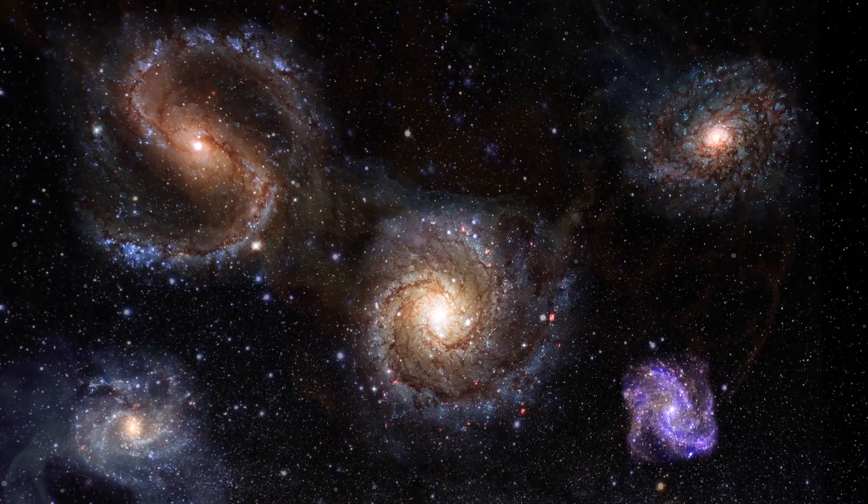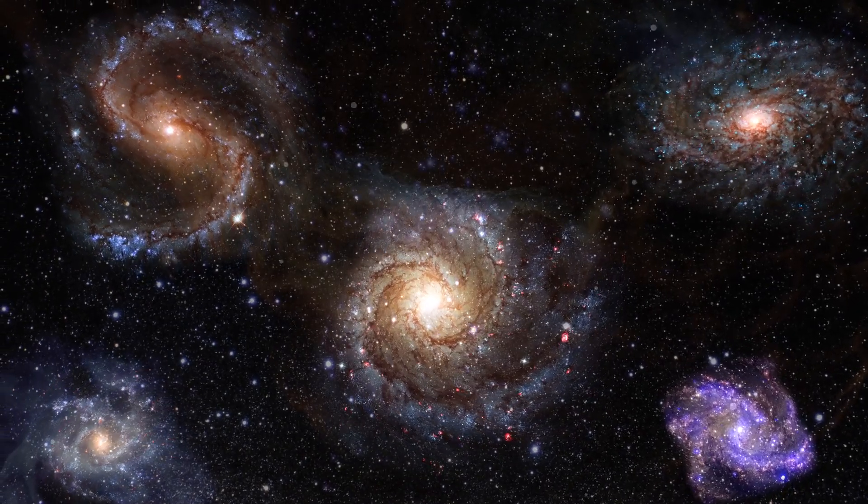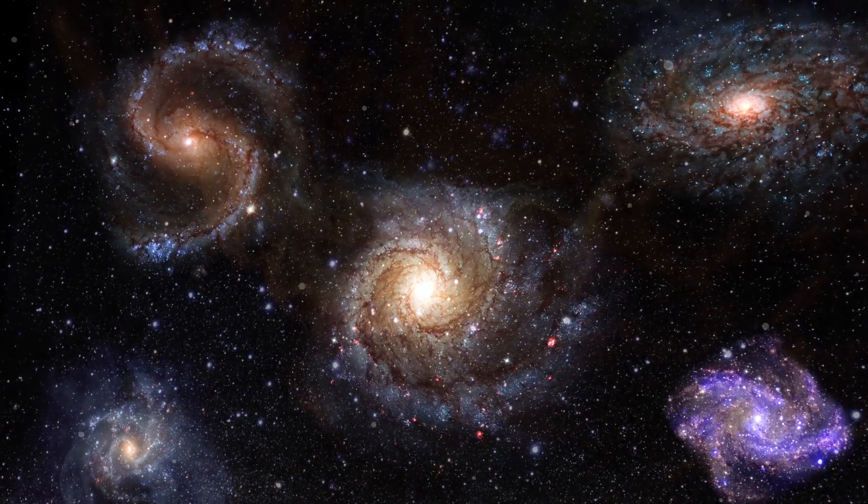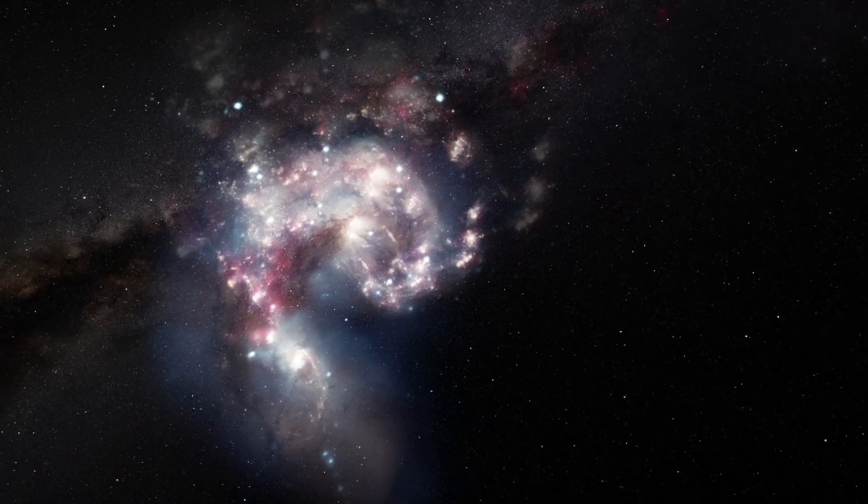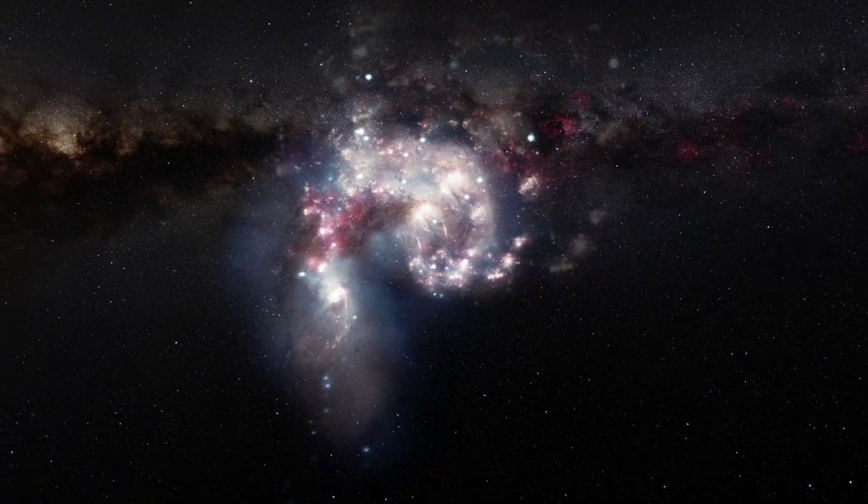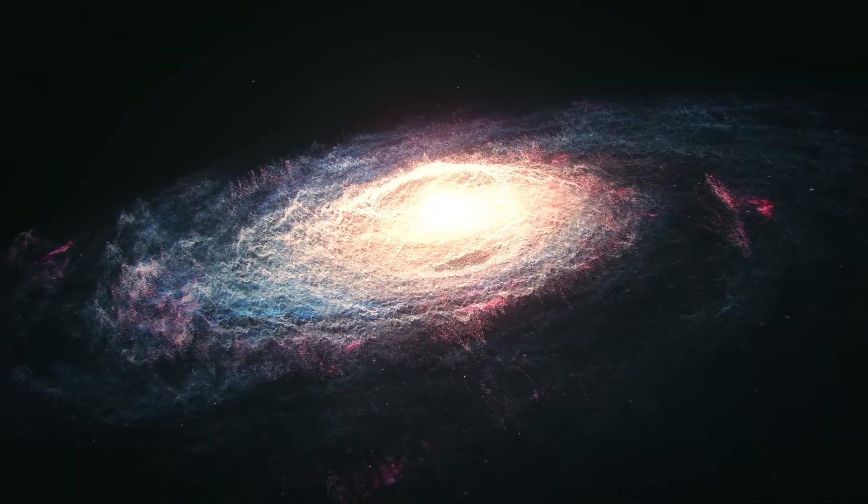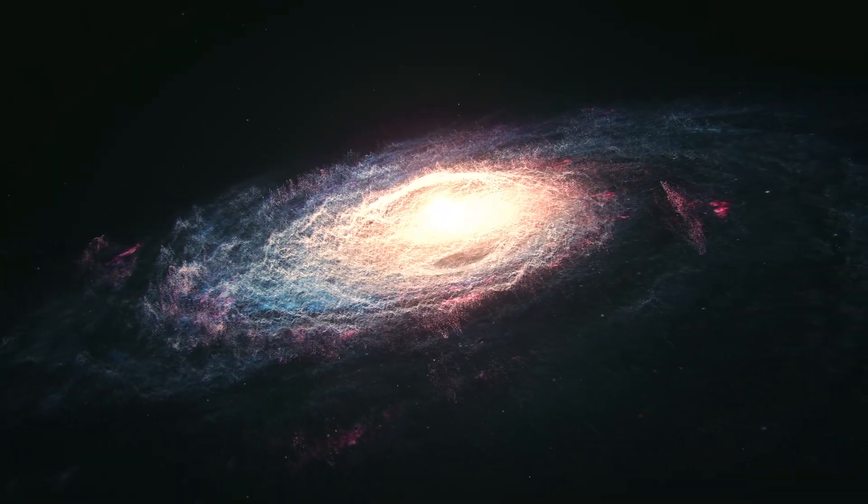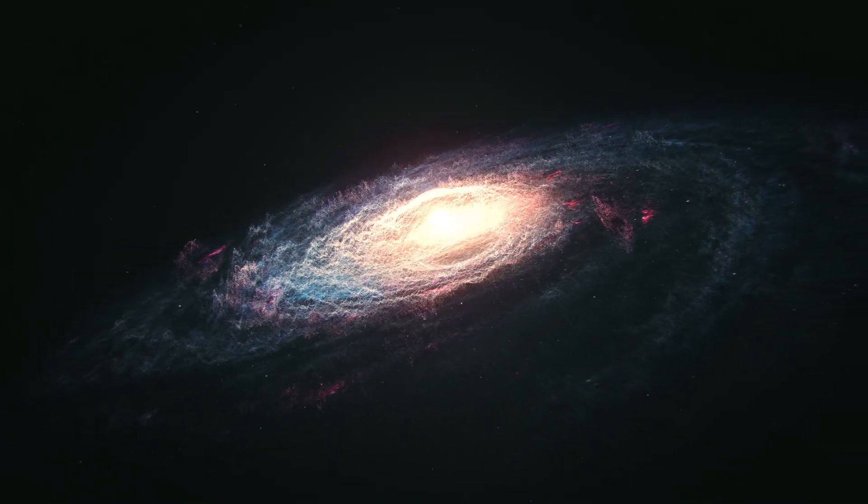The James Webb Space Telescope has discovered six massive galaxies that formed within the first billion years of the universe's existence. These galaxies are massive, containing billions of stars, and are surprisingly mature for their age. They are giving us incredible new insight into the formation of the universe. They are allowing us to see how massive galaxies were able to form so quickly after the Big Bang. Not so trivial, huh?